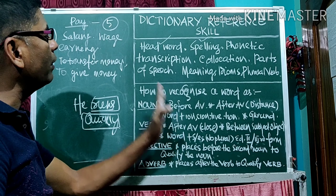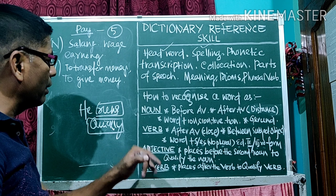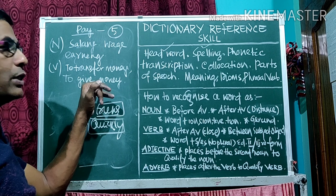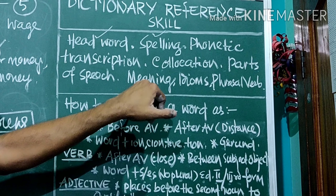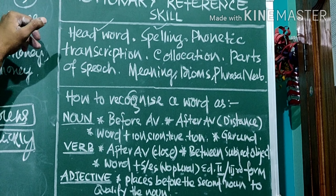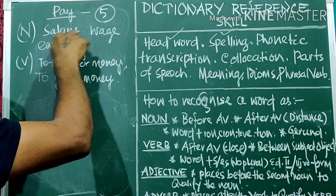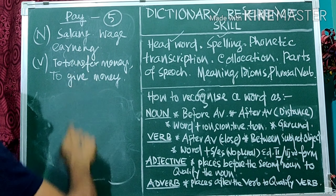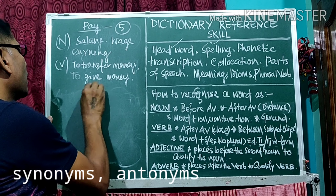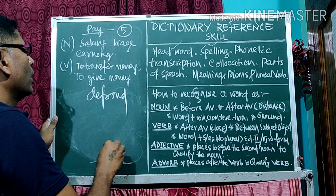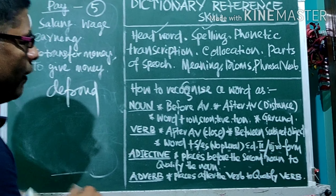Having identified or recognized whether the word is used as a noun, verb, adjective, or adverb, one can easily find out the meaning. The dictionary also gives synonyms — words with the same meaning — and antonyms — words with the opposite meaning. For example, the antonym of 'pay' is 'defrost'. So the dictionary provides the number of meanings, synonyms, and antonyms.